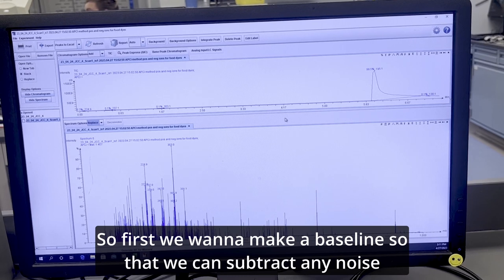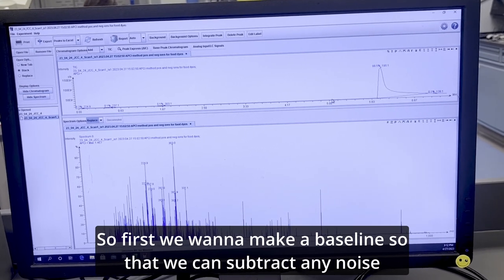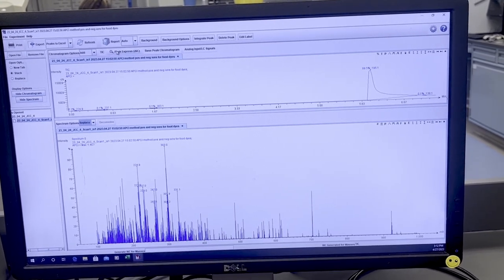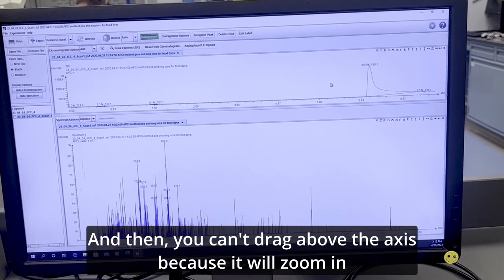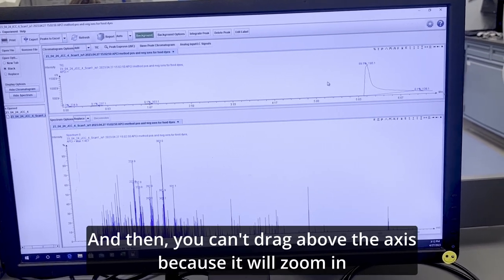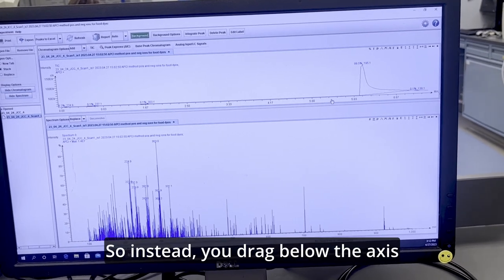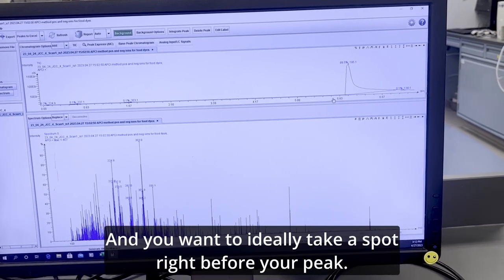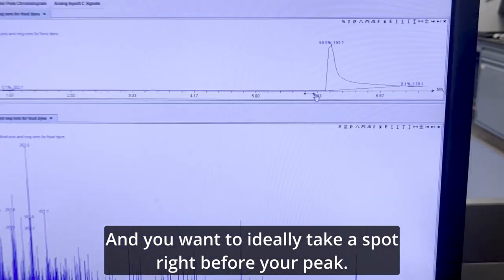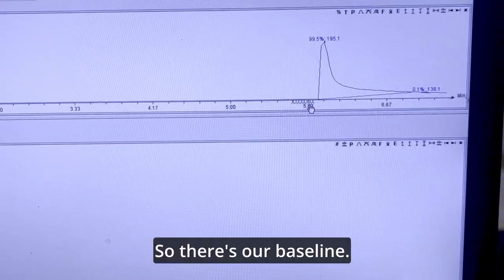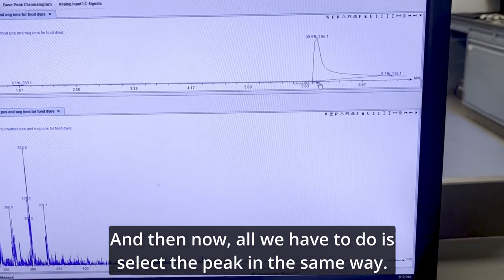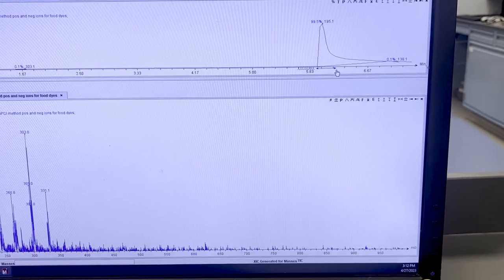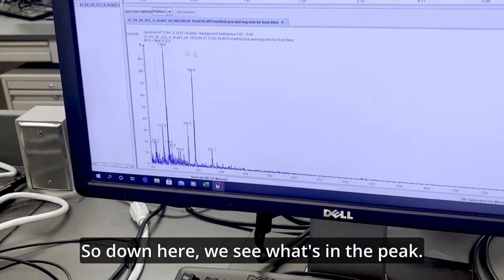So first, we want to make a baseline so that we can subtract any noise. To do that, we click the background button. And then you can't drag above the axis because it will zoom in. So instead, you drag below the axis and you want to ideally take a spot right before your peak. So there's our baseline. And then now, all we have to do is select the peak in the same way.